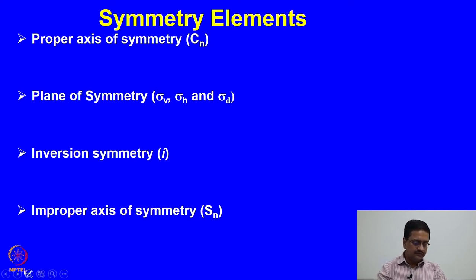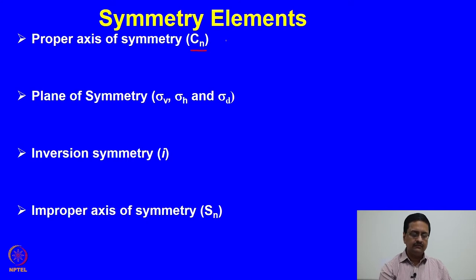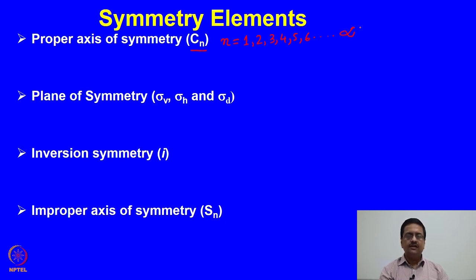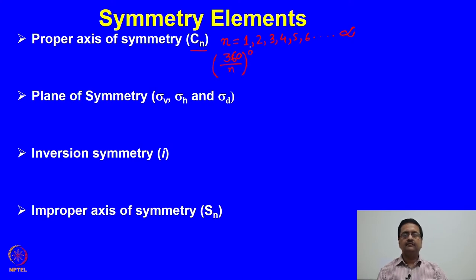The first symmetry element one should look for is the proper axis of symmetry, written as Cn. Here the value of n can be anything from 1, 2, 3, 4, 5, 6, and so on up to infinity — any integral value from 1 to infinity. It means that if you apply this n-fold rotational axis of symmetry, the molecule remains unaltered. If you rotate the molecule about this axis by 360 divided by n degrees, you get the same molecule back.